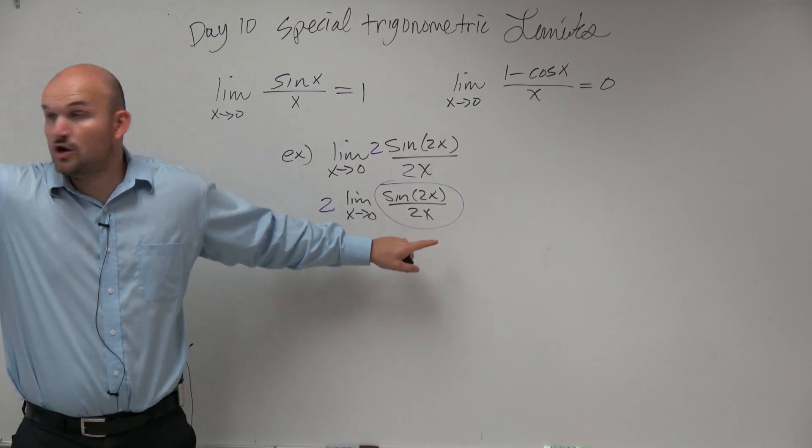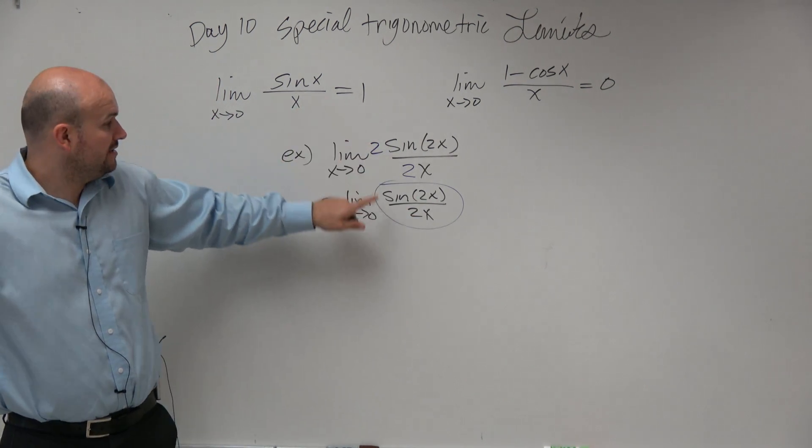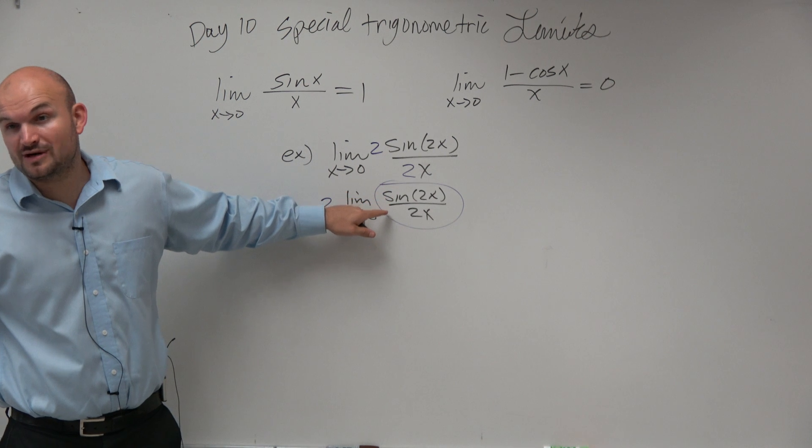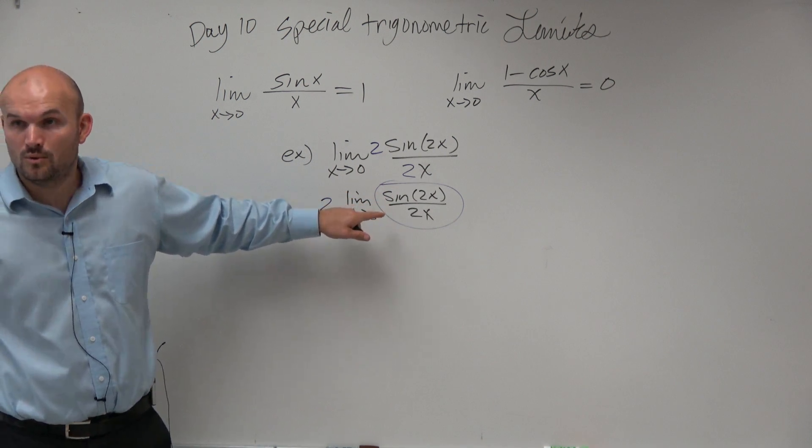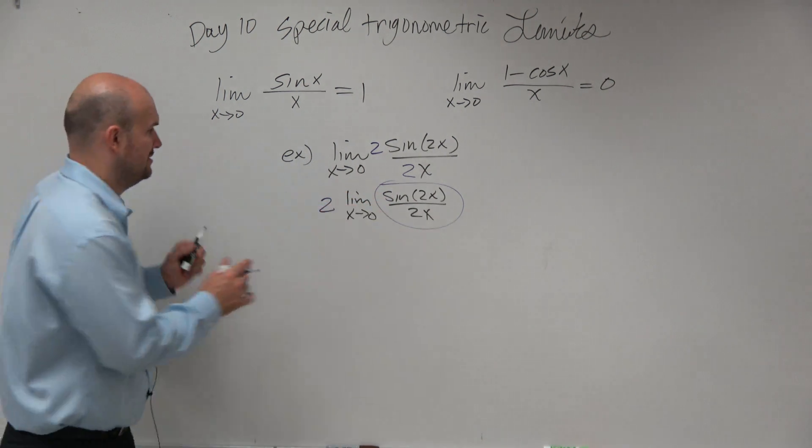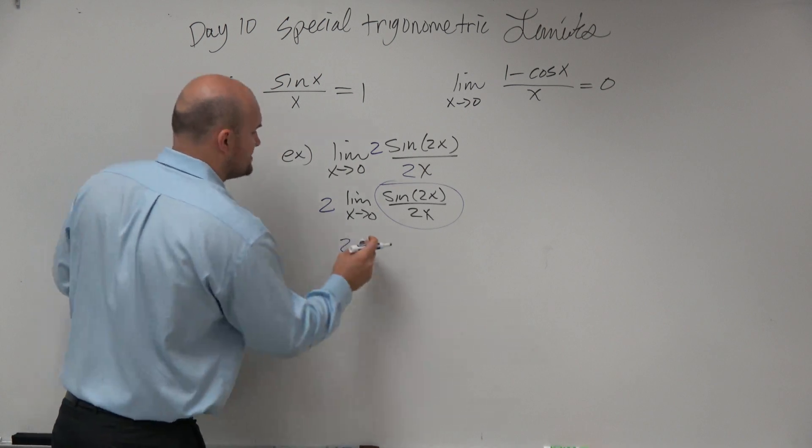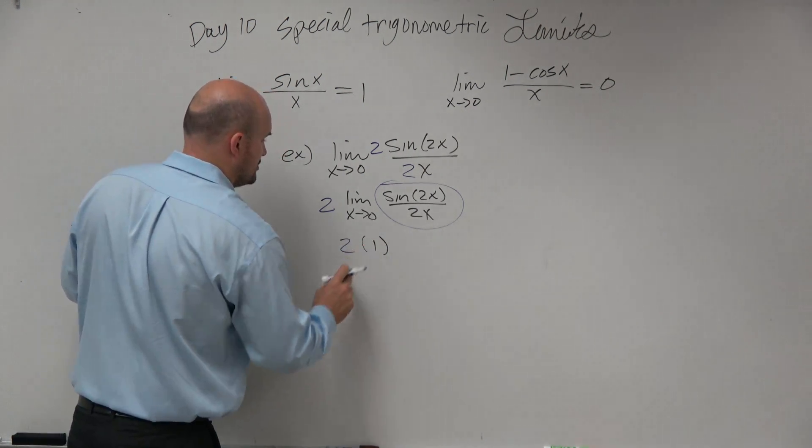Now we have that, which we've shown is the same thing as that. The limit as x approaches 0 of sine of 2x over 2x is 1. So you have 2 times 1, which is 2.